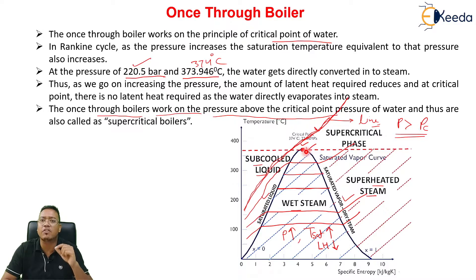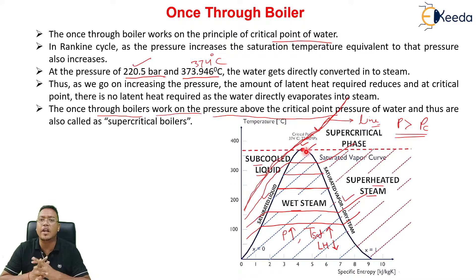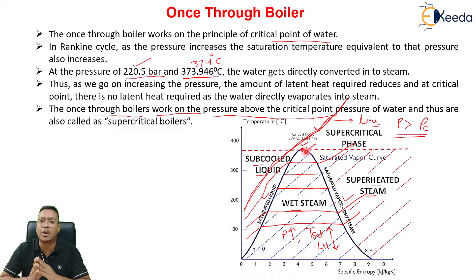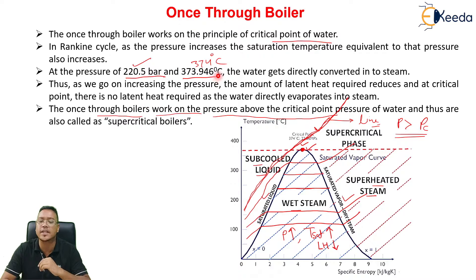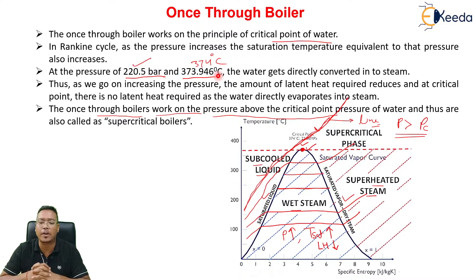The supercritical boiler will work at a pressure beyond the critical point pressure. The value for critical pressure is 220.5 bar, or we can say 221 bar. The temperature is 373.946 degrees Celsius, or approximately 374 degrees Celsius. These are the conditions — pressure and temperature values — at the critical point.